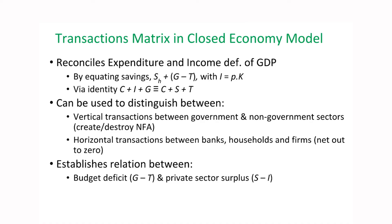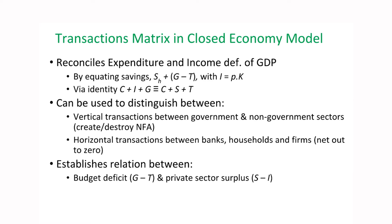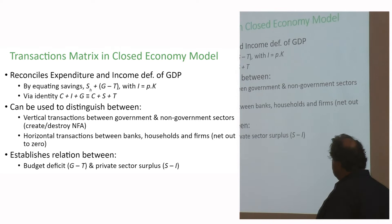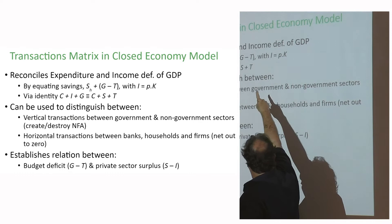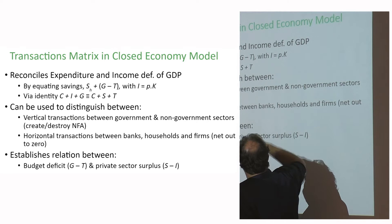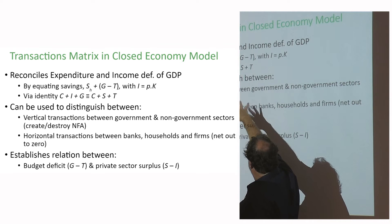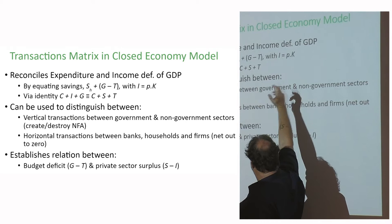In a closed economy, the transaction matrix reconciles the expenditure definition of GDP with income. Another way of thinking about it is it equates savings with investment, where savings is household savings plus government spending in excess of tax. You have the identity between spending on the left-hand side and income — split between consumption, saving, and tax — on the right-hand side.